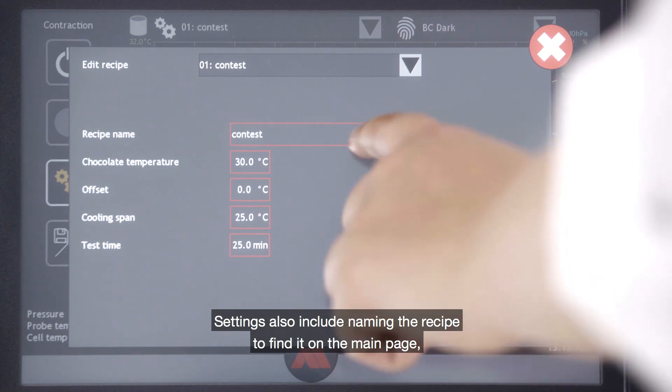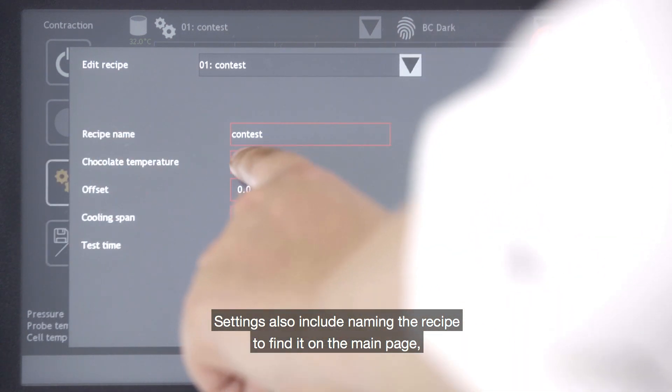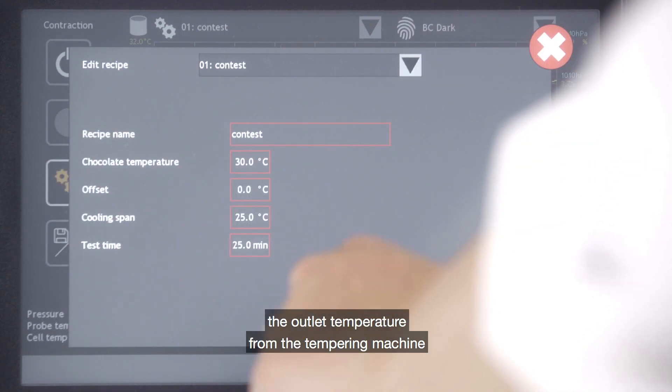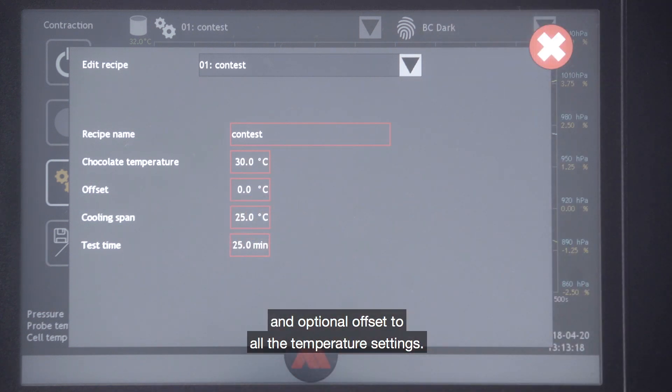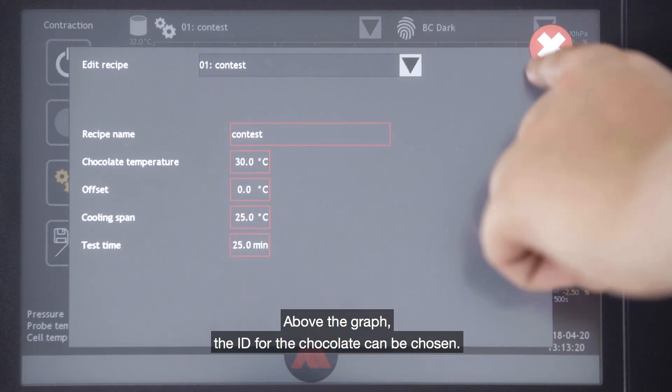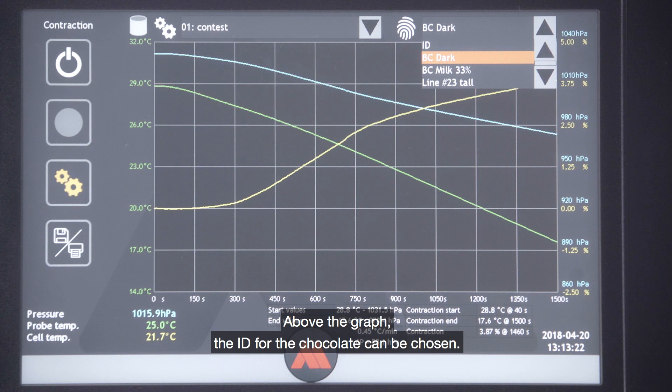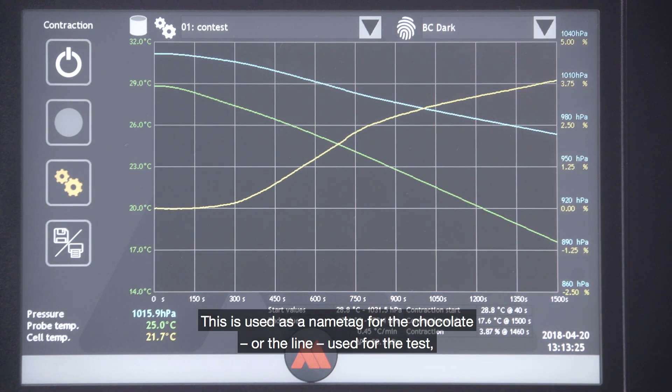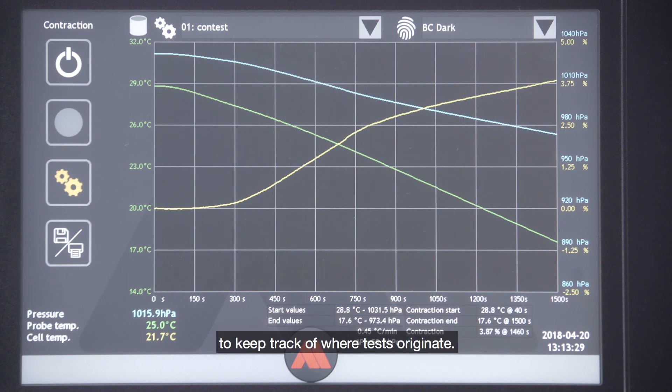Settings also include naming the recipe to find it on the main page, the outlet temperature from the tempering machine, and optional offset to all temperature settings. Above the graph, the ID for the chocolate can be chosen. This is used as a name tag for the chocolate or the line used for the test to keep track of where the test originates.